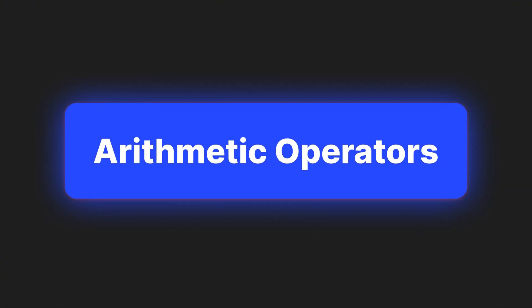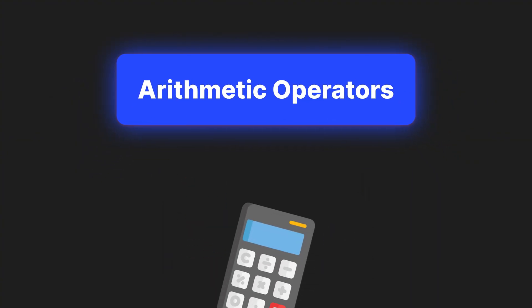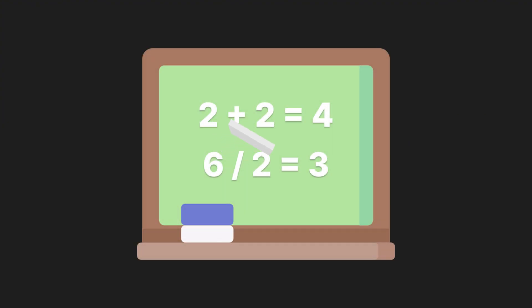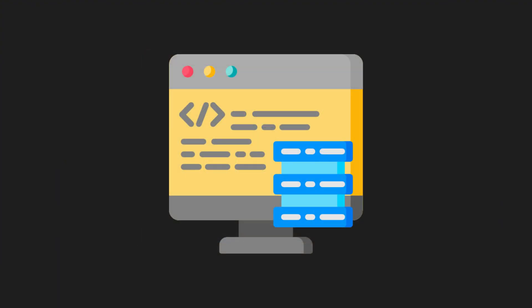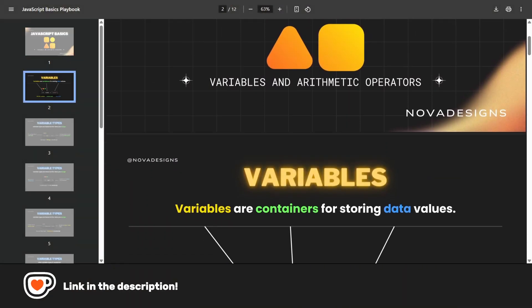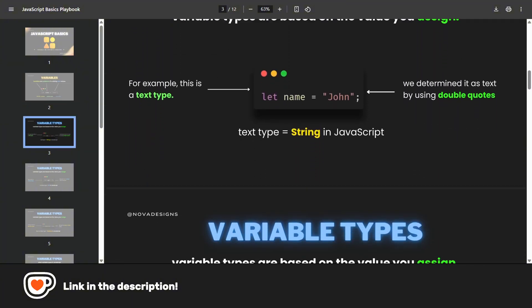These basic operators help us do simple math in JavaScript, just like you would with a calculator. You've already used addition, subtraction, multiplication, and division — it's just like solving math problems in school, except now you're doing it with code. Feel free to explore our cheat sheet designed for variables and arithmetic operators. It has everything in one place, plus some fun activities to help you practice.